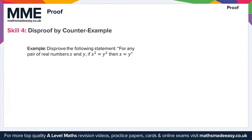Finally, moving on to skill 4: disprove by counterexample. To disprove a statement by a counterexample, all we need to do is show that the statement is false for one case. In this example, we want to disprove: for any pair of real numbers x and y, if x² = y², then x = y. We need to find one set of values such that the statement is false.